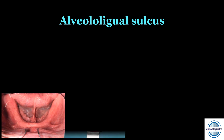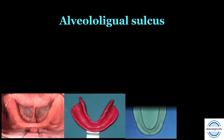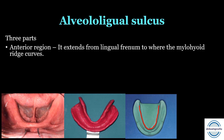On both sides of the lingual frenum there is the alveolingual sulcus, recorded as lingual flange in the impression — the typical S-shape. It can also be marked on the cast. This alveolingual sulcus has three parts. First is the anterior region, extending from the lingual frenum to where the mylohyoid ridge curves. This depression is called the pre-mylohyoid fossa, obtained as the pre-mylohyoid prominence or eminence in the impression. The lingual flange is shorter in this area compared to posteriorly.